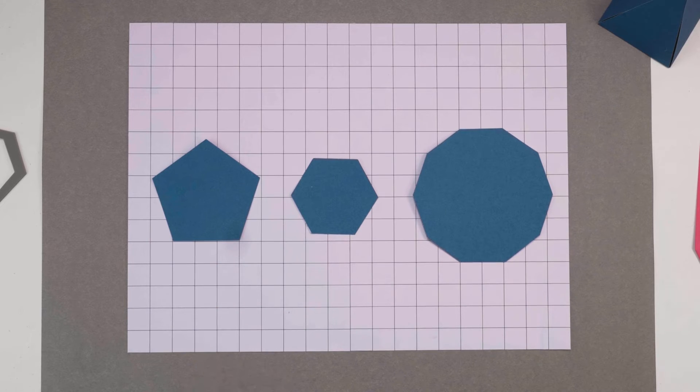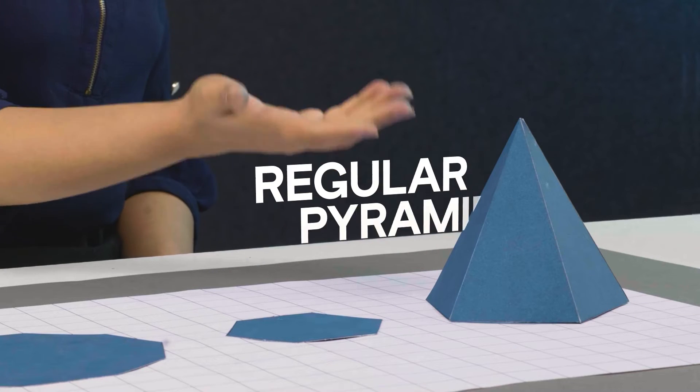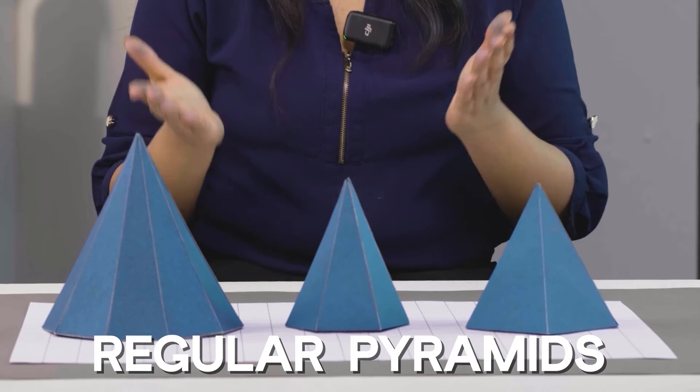Take any regular polygon. If we connect all its vertices to a point directly above its center, we get a regular pyramid. These are all regular pyramids.